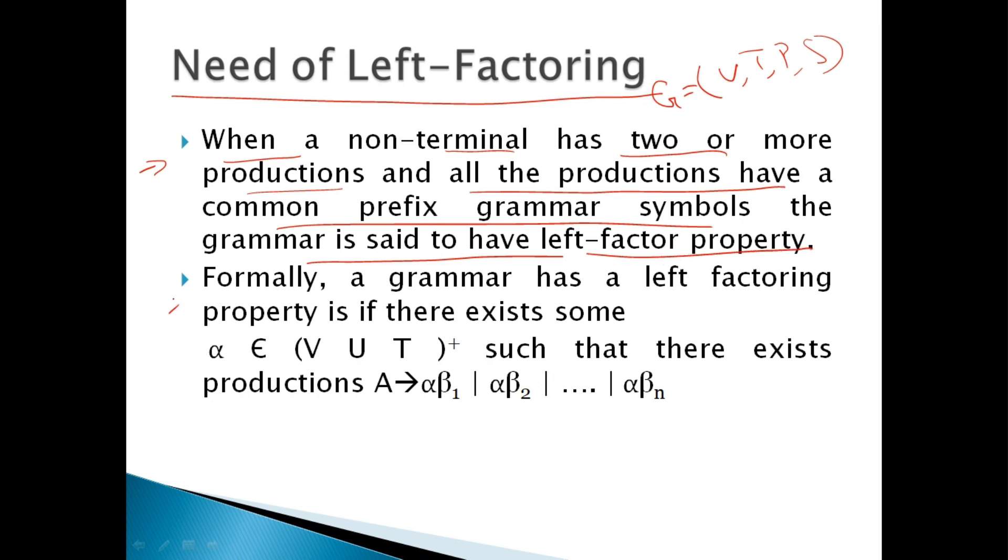Formally, we have defined earlier also a grammar has a left factoring property if there exists some alpha belonging to positive closure of V union T such that there exist productions of the form A is rewritten as alpha beta 1, alpha beta 2 till alpha beta n, and you can see here alpha is the common prefix repeating in all these productions.